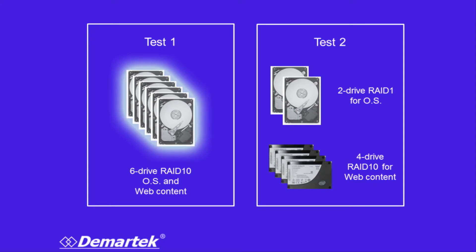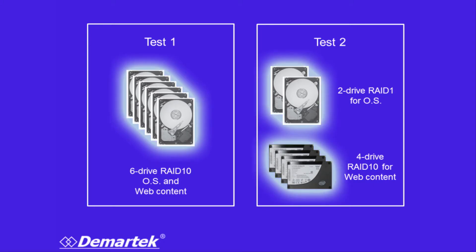So we ran two different tests. In the first test, we used six of these 500 gig SATA interface desktop class disk drives. We set up a single volume with the web content and the operating system there. And then in the second test, we used six drives, but we used only two of these desktop drives for the operating system, and we set up four of these drives — these Intel SSDs — for the web server content.